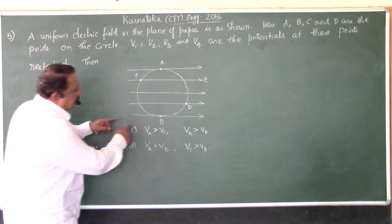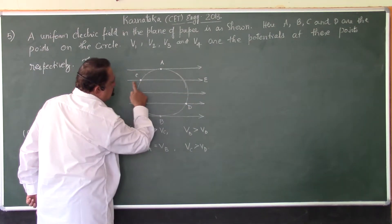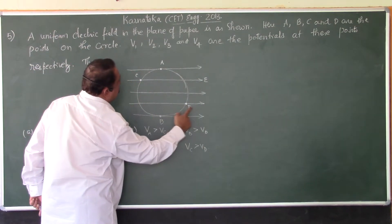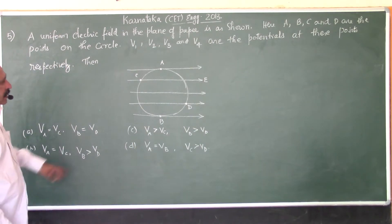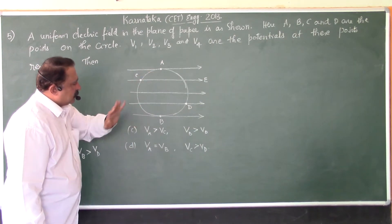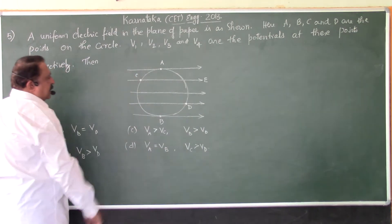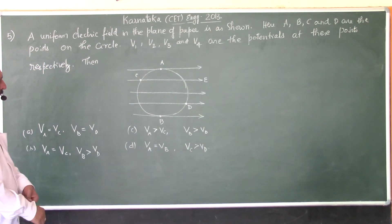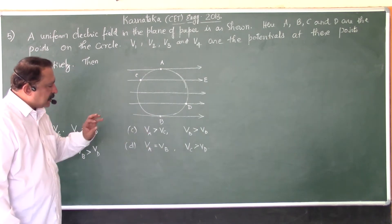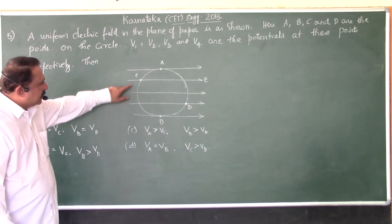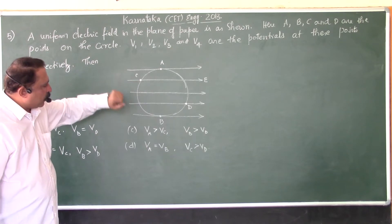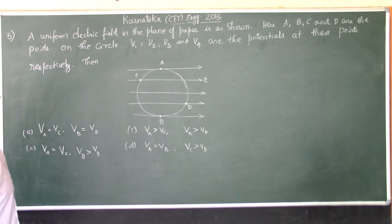Now, it is given that the electric field is a uniform electric field. And A, B, C, D are the points on the circle. For example, VA is the electric potential at the point A, VB means electric potential at point B, VC is at point C and VD is electric potential at point D.